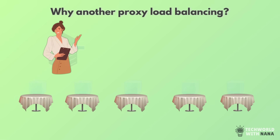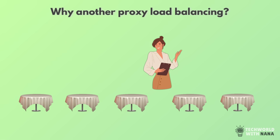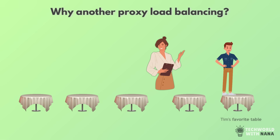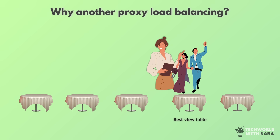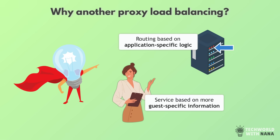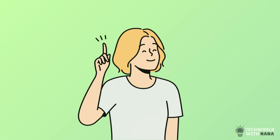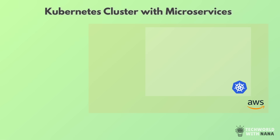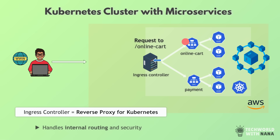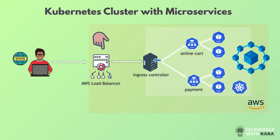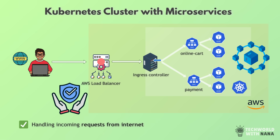In our restaurant scenario, this would be equivalent to the receptionist knowing some loyal guests and showing them to their favorite table, or selecting a table with the best view for guests celebrating a special occasion, or giving a different menu for vegetarian guests — basically more customized request handling based on a little more information about the guests. This setup is actually exactly the one used in a Kubernetes cluster with microservices, where an ingress controller — which is basically a reverse proxy for Kubernetes — handles internal routing and security, while the cloud load balancer acts as the first line of defense, managing external traffic and shielding it before it gets to the cluster.